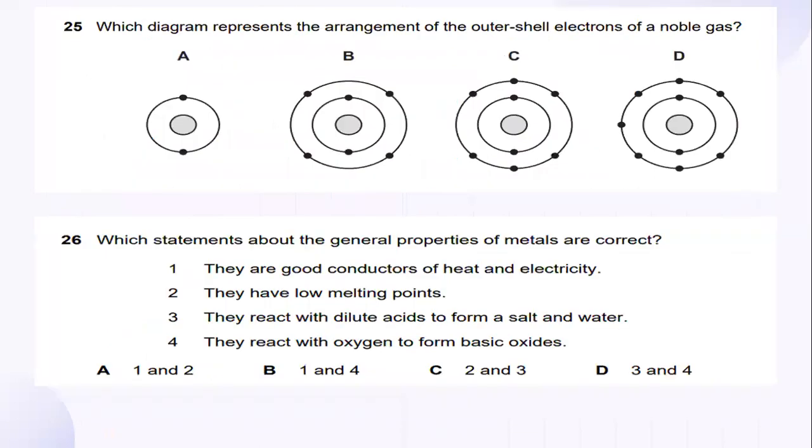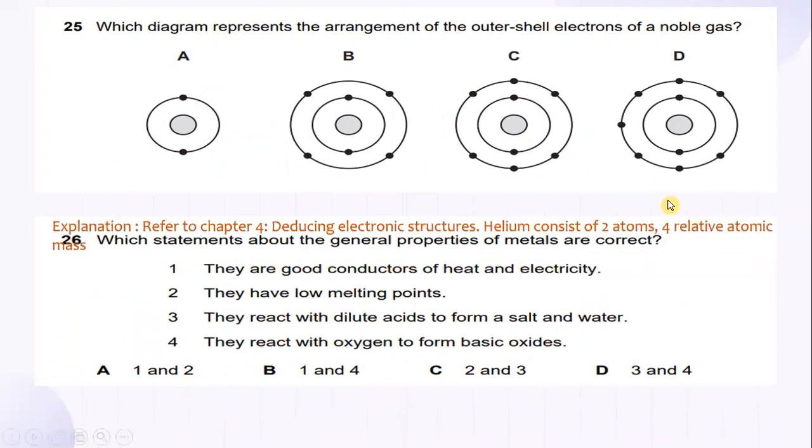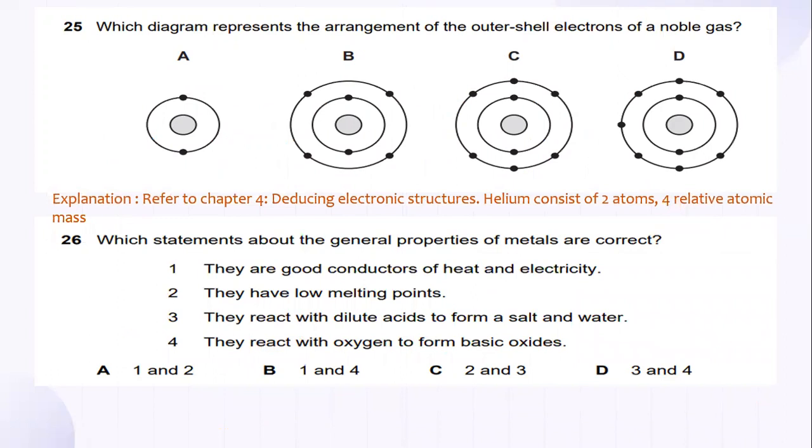Number 25, which diagram represents the arrangement of the outer shell electrons of a noble gas? Refer to chapter 4, under title deducing electronic structures, where it shows helium consists of two atoms for relative atomic mass. So, two atoms and it also consists of four relative atomic mass. The most suitable answer for this is A.